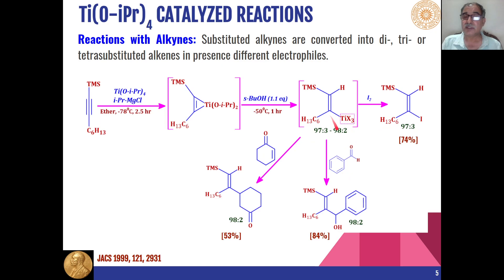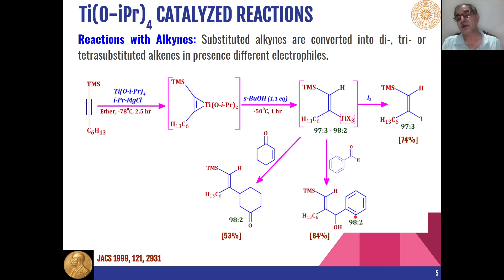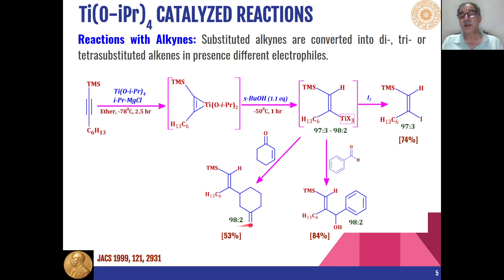When this complex is reacted with carbonyl compounds, the carbonyl carbon acts as an electrophile and the titanium complex adds to the carbon-oxygen double bond, giving allylic alcohols as the product. The product formation is very stereoselective: the same product is formed in 97% selectivity in one case, and 98% in another. When alpha-beta unsaturated ketones are used, addition of the titanium complex takes place to the carbon-carbon double bond to give the organic product.